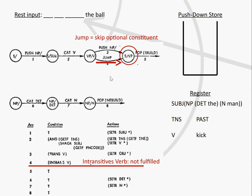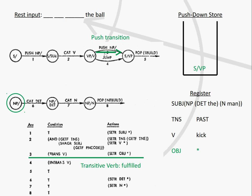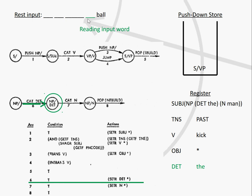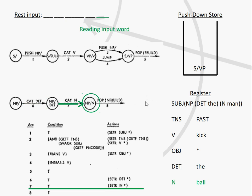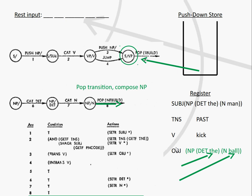That transition's condition says we can only take it if the verb is intransitive. So in the case of an intransitive verb like 'sleeps', we wouldn't need to read another NP and could just skip it. But with 'kick' we cannot. We can use the other transition, which sends us back to read an NP. We store the name of the current state in the pushdown store. The condition is that the verb must be transitive — the automaton confirms this in the dictionary — and we set the object as a placeholder. Then, as before, we read 'the' as a determiner and 'ball' as a noun, composing the NP and placing it in the object position.